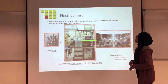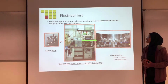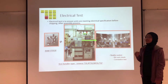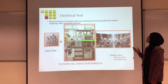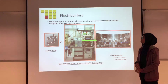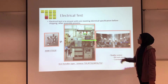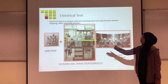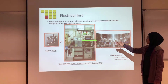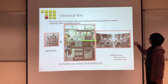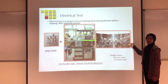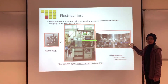Next is electrical test. Electrical test ensures units are meeting electrical specifications before shipping, after the assembly process. This shows the raw stock material, the test handler, and the final process output.